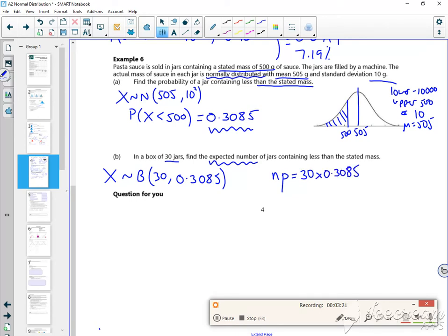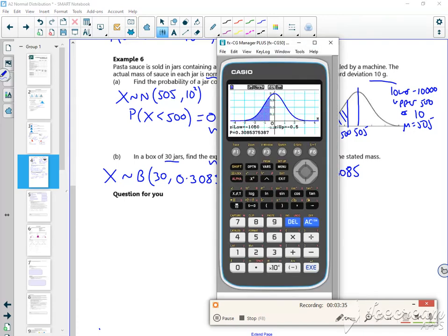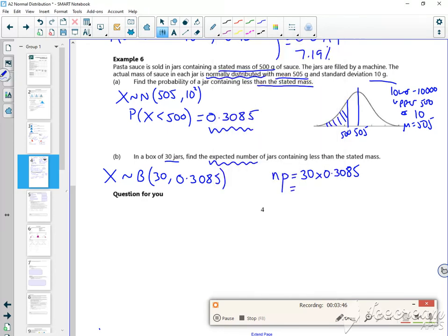And if you think about it, that's what you did with that idea of flipping a coin a hundred times. Or how many times do you get a tail? It's just the number of times times by the probability. So if I do 30 times by 0.3085, I need my calculator. So menu 1. 30 times 0.3085.